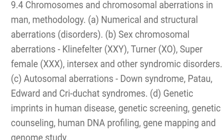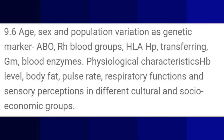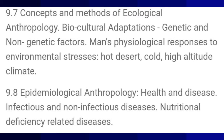9.4 Chromosomes and Chromosomal Aberration in Man. 9.5 Race and Racism. Biological Basis of Morphological Variation of Non-Metric and Metric Characters. Racial Criteria. Racial Traits in relation to Heredity and Environment. Biological Basis of Racial Classification. Racial Differentiation and Race Crossing in Man. 9.6 Age, Sex and Population Variation as Genetic Markers: ABO Blood Group, Genes and Serological markers. 9.7 Concepts and Methods of Ecological Anthropology and Biocultural Adaptation. 9.8 Epidemiological Anthropology.